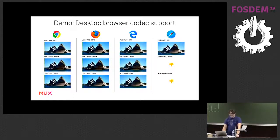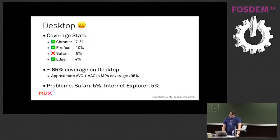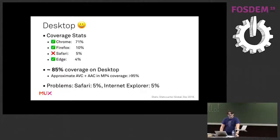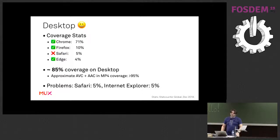Putting that into numbers: with no extra work, that works out to about 85% of desktop browsers as of today. The equivalent for AVC and AAC I think is over 95%. So we're within 10% for the starting point, and I actually think that's pretty good. The big problem areas by numbers are Safari, which represents about 5% of traffic, and Internet Explorer itself is another 5% and another whole different set of headaches.